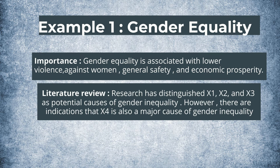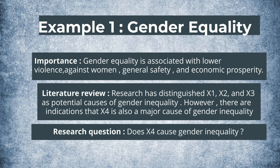For example, the researcher may say that research has distinguished X1, X2, and X3 as potential causes of gender inequality. However, there are indications that X4 is also a major cause of gender inequality. The research question could then be: does X4 cause gender inequality? Based on the literature review, this seems not only a novel question, but also a timely question that connects well to the research conducted to that point.